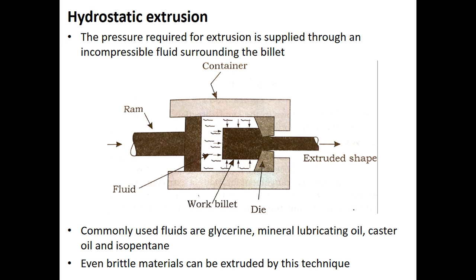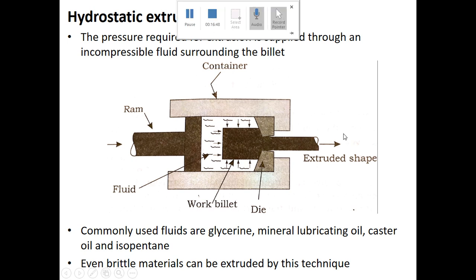Different types of fluids are used in hydrostatic extrusion. The commonly used fluids for exerting the pressure on the billet are glycerin, mineral lubricating oil, castor oil and isopentane. The advantage of this process is that even brittle materials can be extruded by this technique.